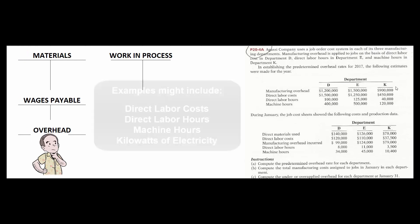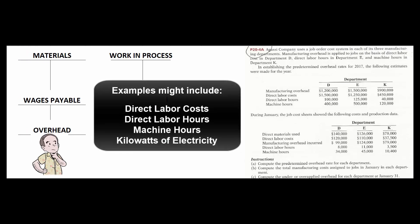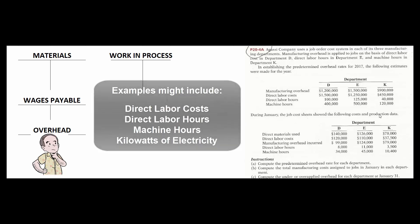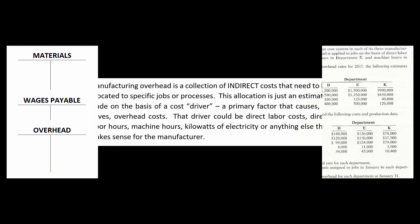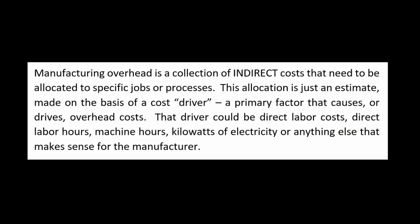One final caveat: different departments, different companies, and different sub-sections may use different drivers — it could be direct labor cost, direct labor hours, machine hours, kilowatts of electricity, or anything else. Read the problem carefully. Students often see direct labor cost in the first problem and assume it's the rule for all companies and departments. Each department and company will use a different driver in the denominator of that fraction, so just be careful of that and you'll be all set.